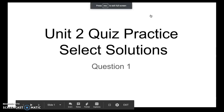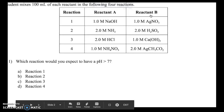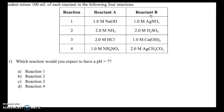Welcome to unit 2 quiz practice select solutions, question 1. In this question, we are told a student mixes 100 milliliters of each reactant in the following four reactions. We're given a table of four reactions, and for each reaction we're given reactant A and reactant B. We're asked: which reaction would you expect to have a pH greater than 7?